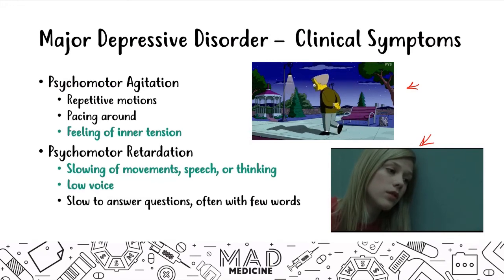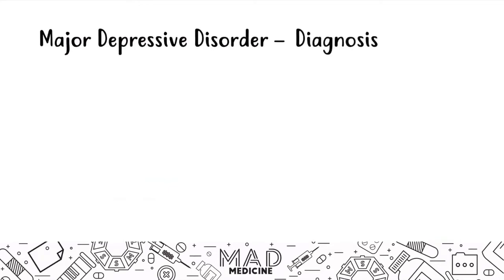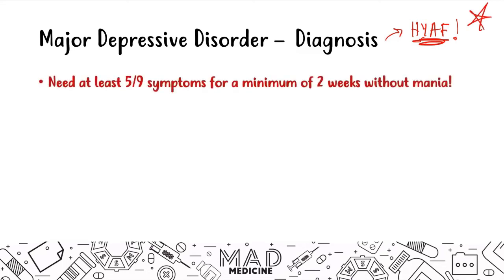One of the most important things in psychiatry for the USMLE Step 1 is understanding diagnostic criteria. One or two differences in diagnostic criteria can change the entire diagnosis. For MDD, you need to have at least five of the nine symptoms we've discussed for a minimum of two weeks. Two weeks is the golden number you need to know for duration, and all of these symptoms must occur without mania.